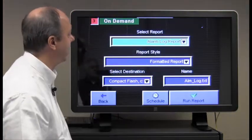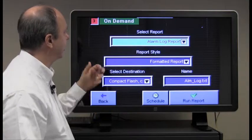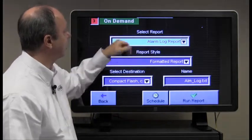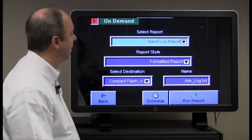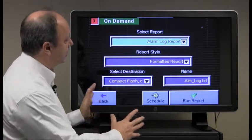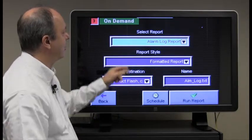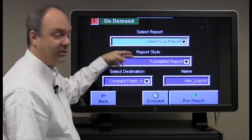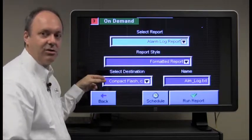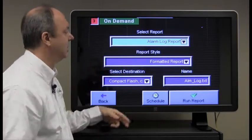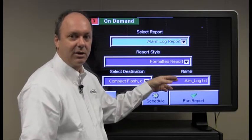So we'll cover these. The first one is on demand. The operator simply presses on demand, and it brings up this screen, indicating that it's an on demand report. And you have some things to fill out here. It depends on the type of report that you want, the style of the report, the destination that you'd like the report to go to, as well as the name of the file that you'd like to create.